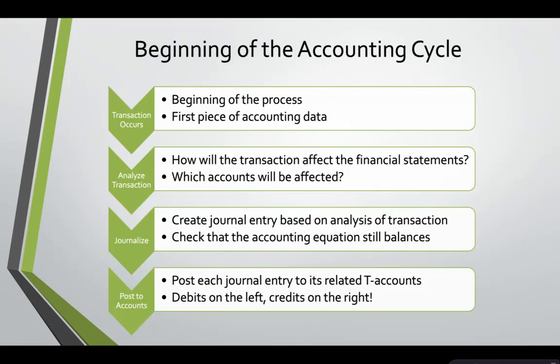Our next step is to post to the accounts. We will post each journal entry to the related T accounts. We will enter the amount of inventory on the left-hand side of the inventory T account. We will also post to the right-hand side, or the credit side, of the accounts payable T account.